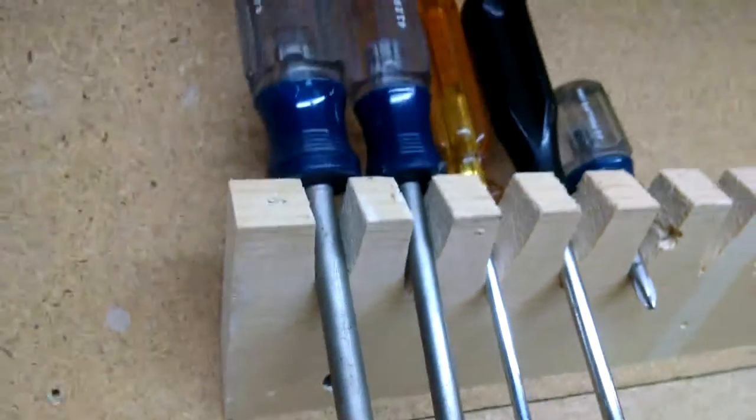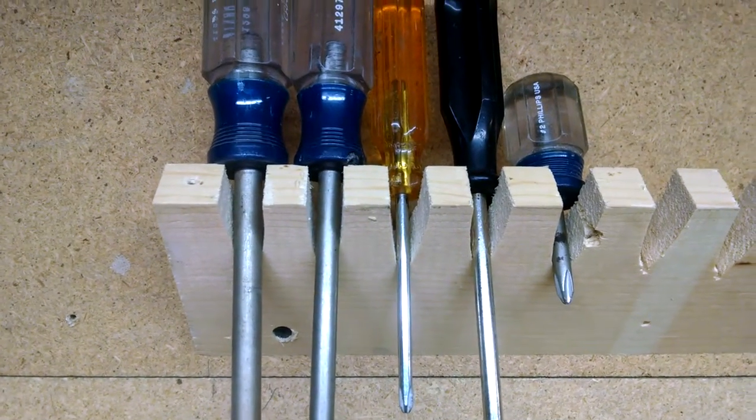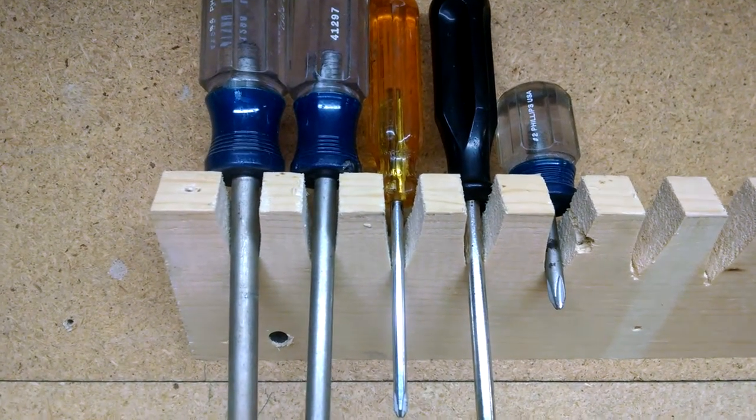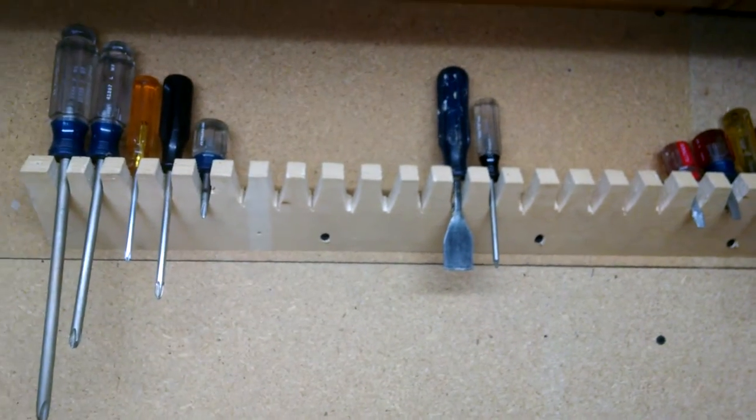You can see there. And then I just, with my saber saw or my jigsaw, whatever you want to call it, cut these little V notches in the wood all the way along. And you can see, I've got my flats down there, my Phillips down there, and some chisels and various things there.